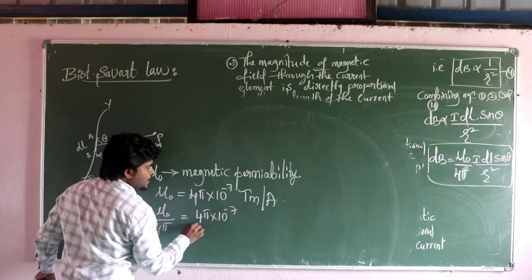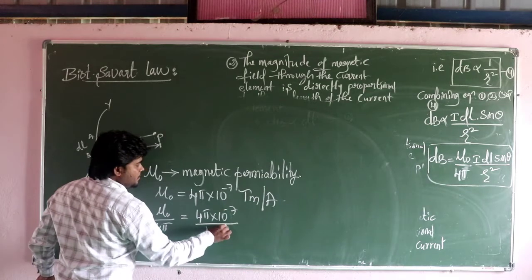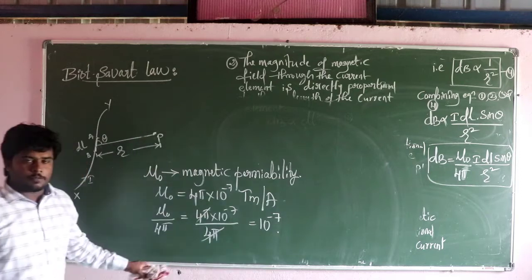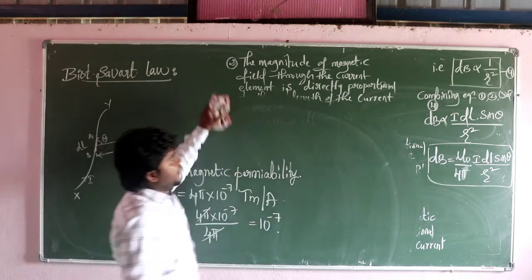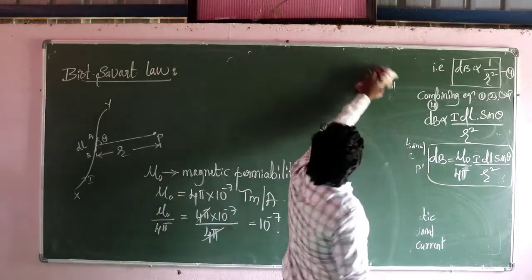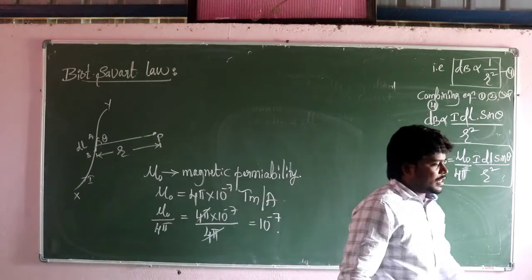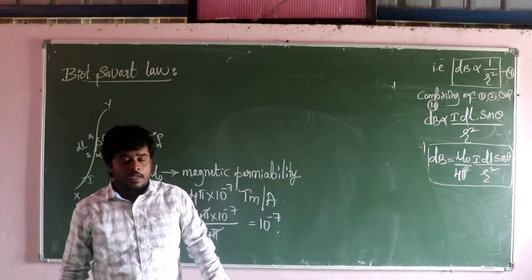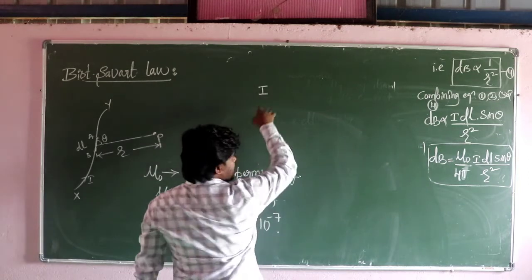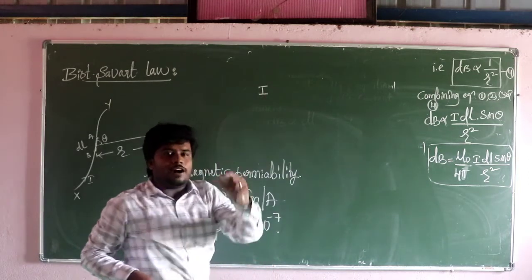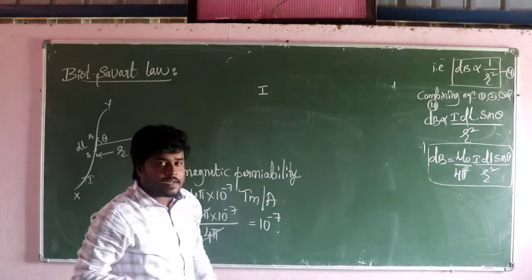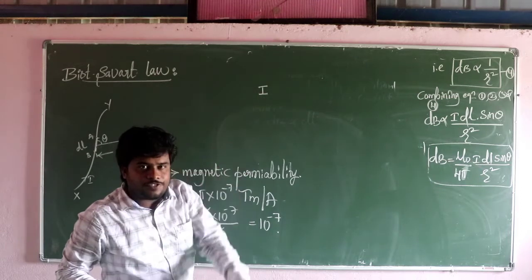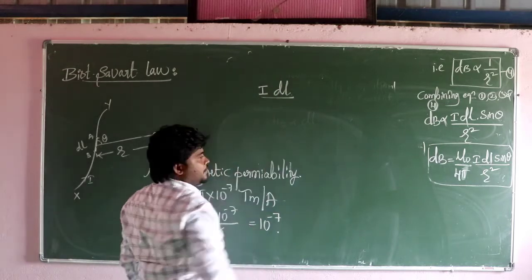So the value of mu0 divided by 4pi is: 4pi into 10 to the power minus 7, divided by 4pi — the 4pi gets cancelled, giving a value of 10 to the power minus 7. This is the constant of proportionality. Here, i dl is the current element.